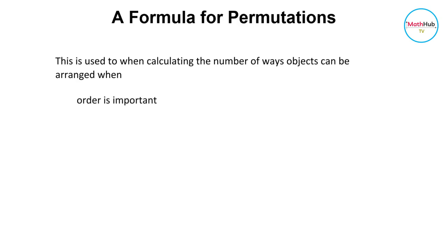The permutation formula is the formula that you are going to use if you want to find the number of ways n objects can be arranged when the order is important and also when repetition is not allowed. That means no item is used more than once.